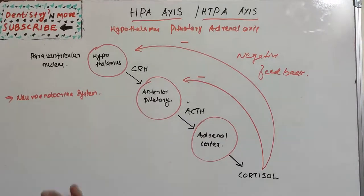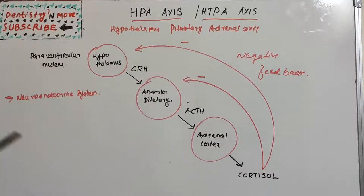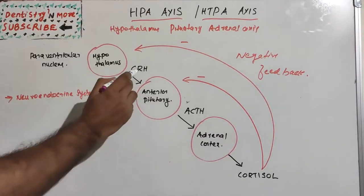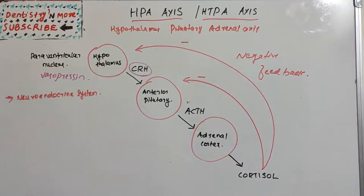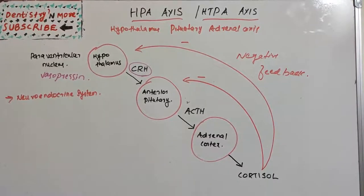Now, the paraventricular nucleus of the hypothalamus — there are many nuclei, and particularly the paraventricular nucleus of the hypothalamus contains neuroendocrine neurons which synthesize and secrete two hormones: vasopressin and corticotropin-releasing hormone (CRH). These are released from the paraventricular nucleus of the hypothalamus.